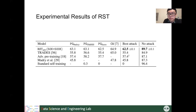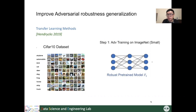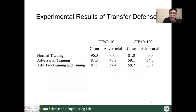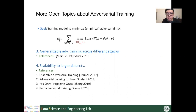Another work uses transfer learning: first adversarially training a model on a downsized ImageNet dataset, then fine-tuning on CIFAR-10. By this process, the model gets help from information in the ImageNet dataset, and the transferred model improves robustness by more than 10%. Other hot topics include designing adversarial training strategies generalizable to different attack types (e.g., L-inf, L-1, and L-0 norm bounded attacks), and improving the scalability and efficiency of adversarial training, since it requires iterative PGD attacks and thus several times the normal computational cost.